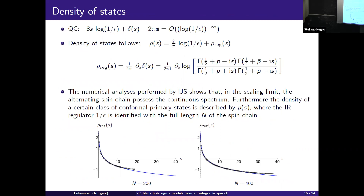Assuming this density of states, one can predict how the continuous states contribute to the partition function — integrating over possible values of zero-mode momentum and summing over windings and U(1) charges. This gives a formula involving the eta function and characters of a free boson field. However, this is not the whole story, because together with the continuous spectrum there are also discrete states — states whose wave function is localized in the vicinity of the tip of the cigar.